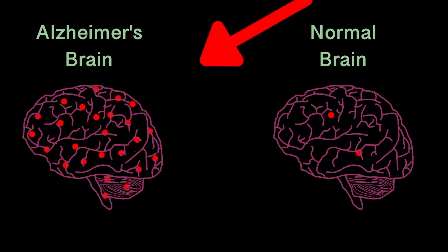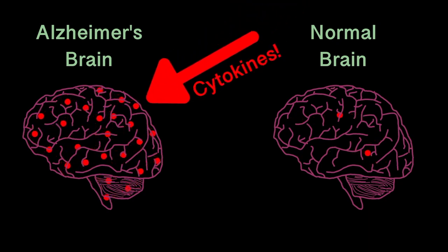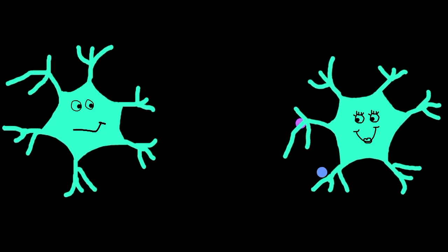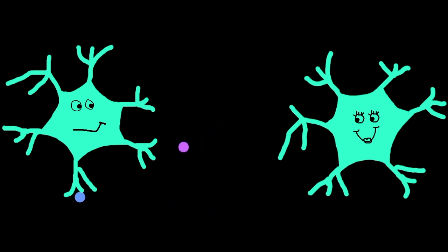This inflammation can be measured by looking at little signaling molecules in the brain called cytokines. In the brain, glia are constantly reacting and releasing different cytokines to communicate with the surrounding cells about what is going on.